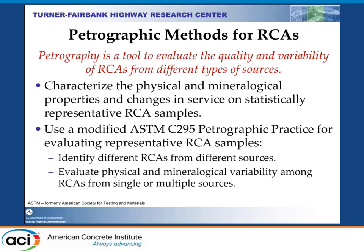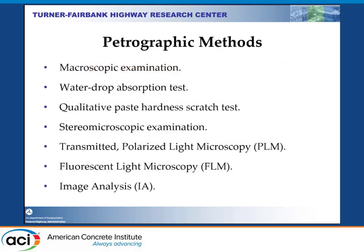We characterize the physical and mineralogical properties and changes in service on a statistically representative RCA sample — similar to doing petrography on a virgin aggregate using C295, but modified for this material. During evaluation, we identify different RCA from different sources, evaluate the physical and mineralogical variability from particle to particle, either from single or multiple sources. Methods used include microscopic examination, water drop observation, qualitative paste hardness scratch test, stereomicroscopic examination, polarized light microscopy (transmitted light), fluorescence light microscopy (reflected light), and image analysis.